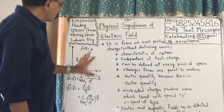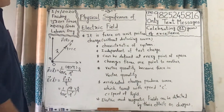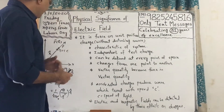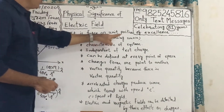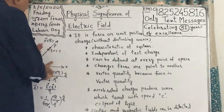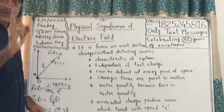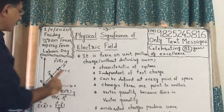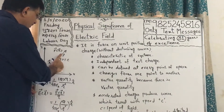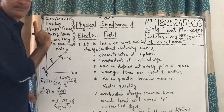From this we can derive these points. First of all, what is electric field? It is force on unit positive charge. But keep in mind that the unit positive charge must not disturb the source system.